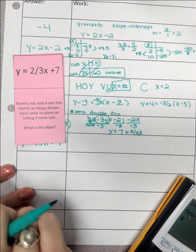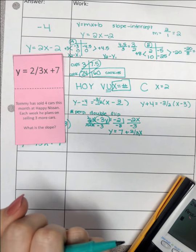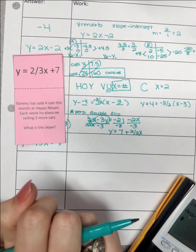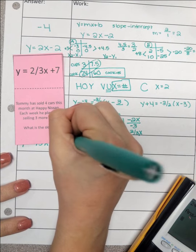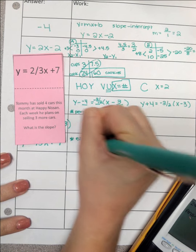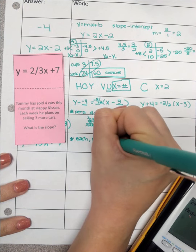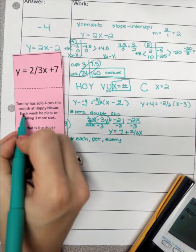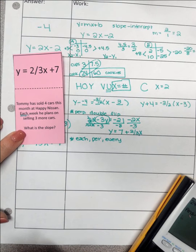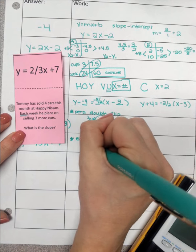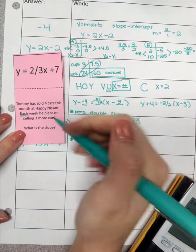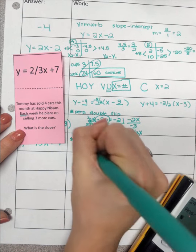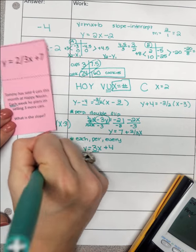Alright, Tommy has sold 4 cars this month at Happy Nissan. Each week he plans on selling 3 more cars. To find the slope, you look for the words each, per, or every. Do we see any of those to be able to find the slope? Each week he plans on selling 3 more cars. So the slope here would be the 3. So 3x, and it's starting off with 4. This would be your equation. That 3 is the slope.